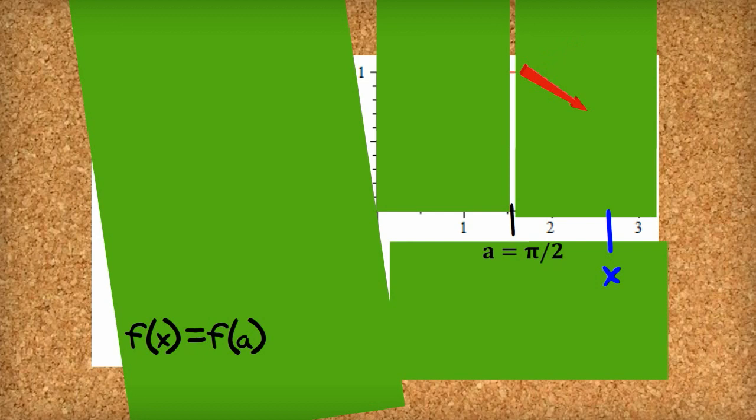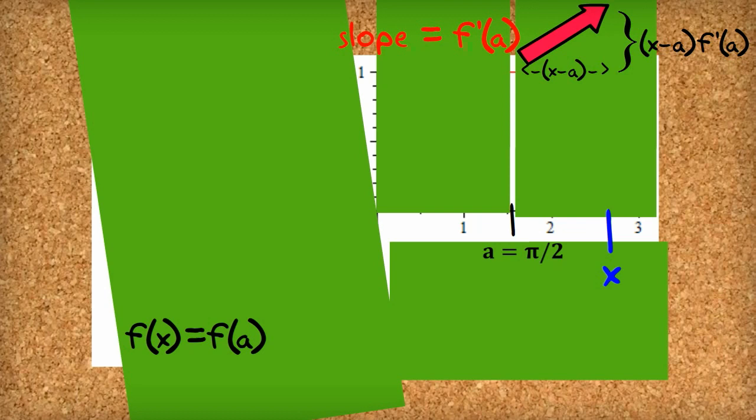The next student says, well, we can actually work this out. We know that the slope is the derivative, f dash at the point a. We know that the run here, this distance here is x minus a. So we can work out the rise, this little bit here. And that will be x minus a times f dash a. And we can just add that on. So at this point, we've got fx equals f of a plus x minus a times the derivative of f at the point a.